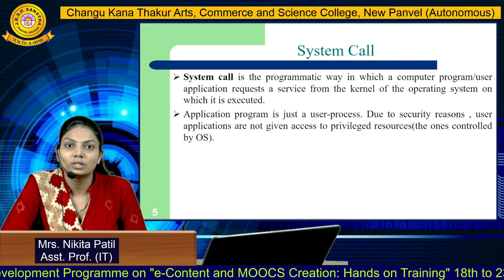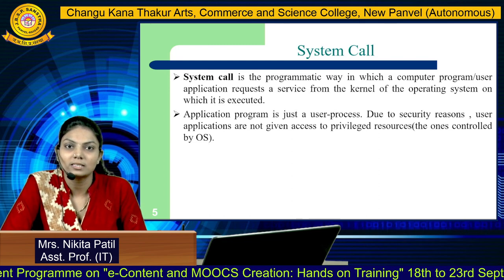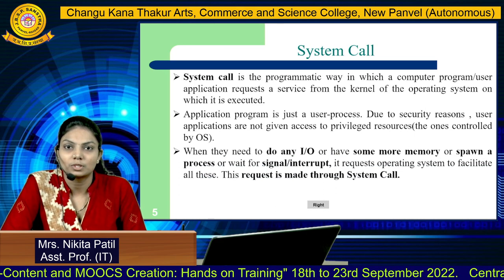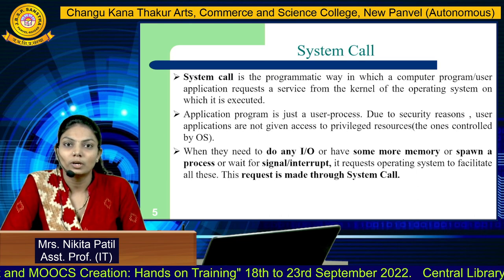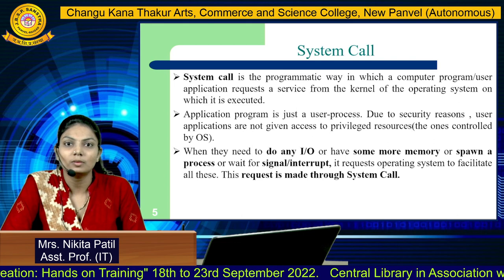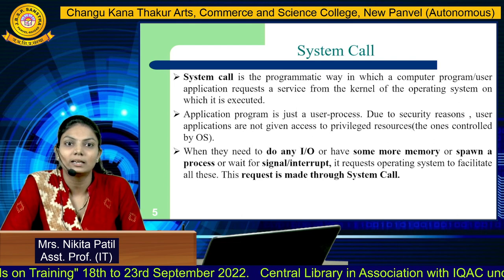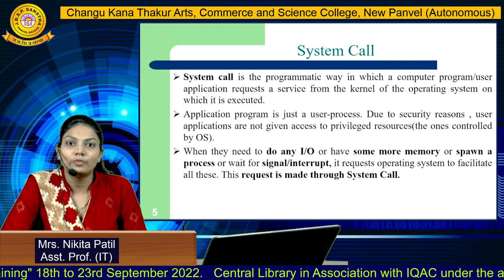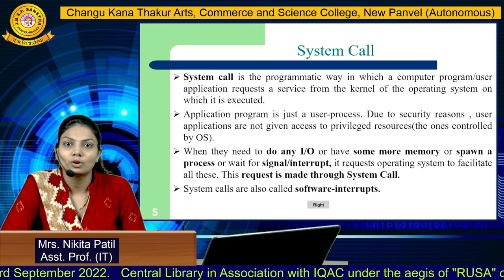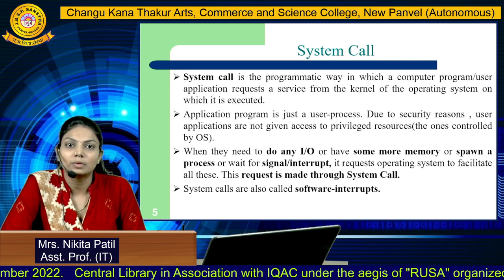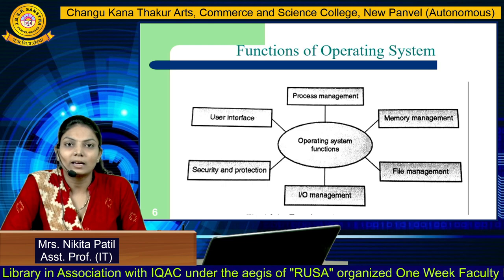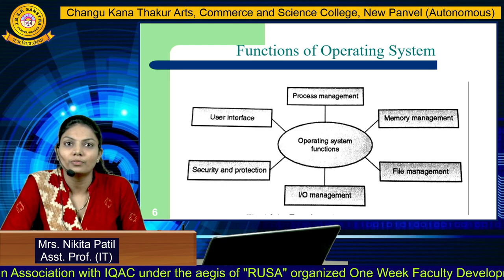An application program is just a user process. Due to security reasons, user applications are not given access to privileged resources — the ones controlled by the operating system. When they need to do input/output, request more memory, span a processor, or wait for a single interrupt, the operating system facilitates all these requests. These requests are made through system calls, which are also called software interrupts.